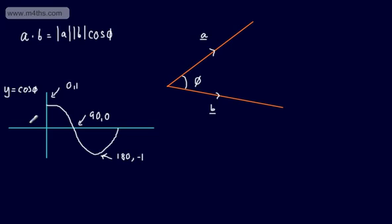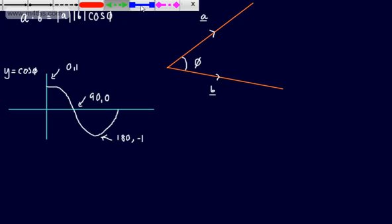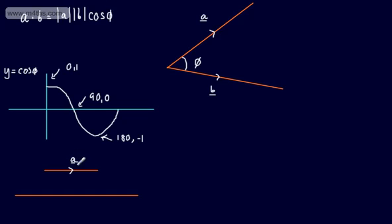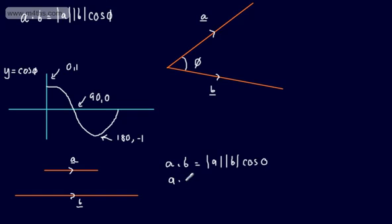Let's look at the three scenarios. The first scenario is two parallel vectors. Consider vectors A and B that are parallel — the angle between them is zero. So, applying the dot product: A dot B equals the modulus of A multiplied by the modulus of B multiplied by cos of zero. Since cos of zero is one, A dot B simply equals the modulus of A multiplied by the modulus of B. That's a standard result. If you took unit vectors and dotted i with i, you'd get one, since both have length one.